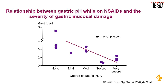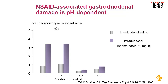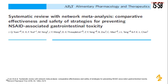Let's look at the damage in relation to pH. There is a reverse relationship: when the pH is low, the damage is high. We want to increase the pH to reduce the acidity and thereby reduce damage. A systematic review with network meta-analysis assessed the comparative effectiveness and safety of strategies for preventing NSAID-associated gastrointestinal toxicity.